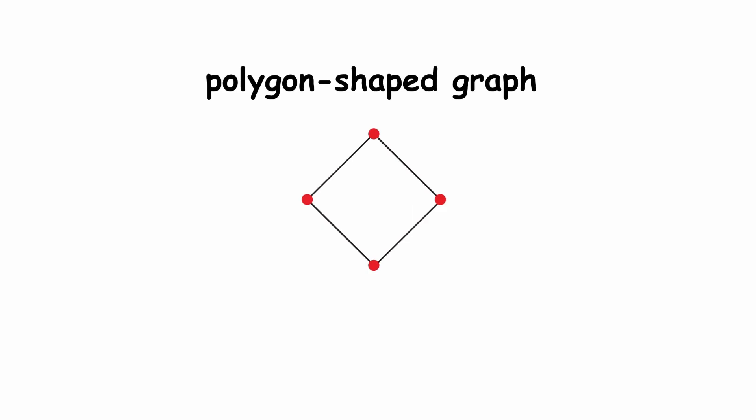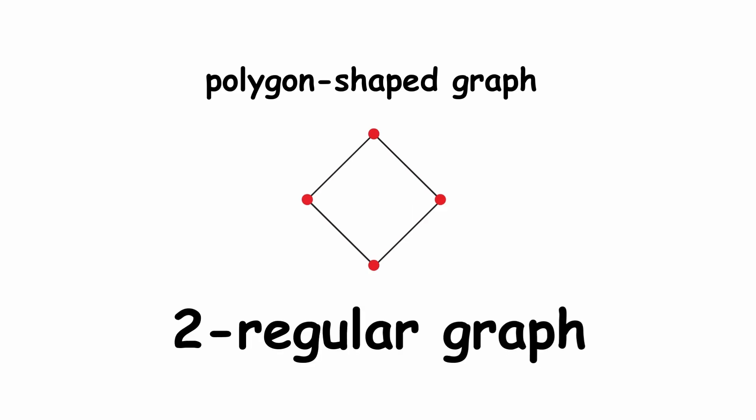For instance, a polygon-shaped graph would be a two-regular graph, since each vertex has two neighbors.